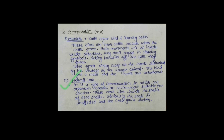दूसरा example — Hermit Crab। It is a type of Commensalism in which one organism creates an environment suitable for another। यह Crab, dead Snails के shell में रहता है — तो इस Crab को वहाँ Shelter मिल गया। Obviously the Snail is unaffected — Snail उस case में Unaffected है। And Crab gains Shelter। This is Commensalism।